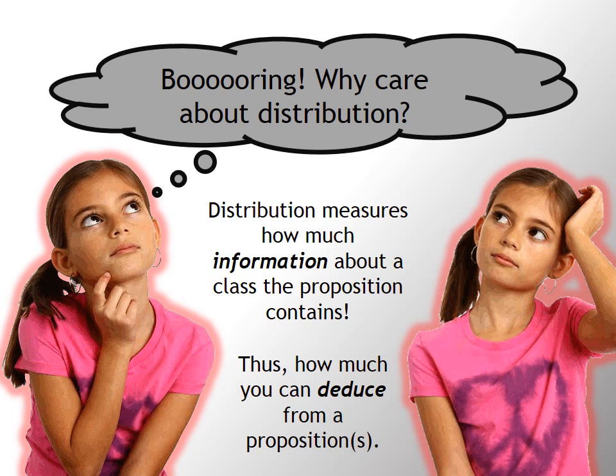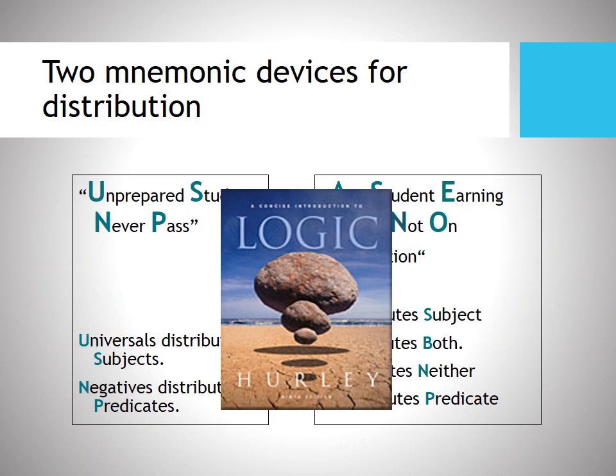Because one principle of deduction that we studied earlier is that the conclusion is never allowed to go beyond the premises. It just teases out information that was already there. So, for example, if you have a term that's distributed in your conclusion, it had better have been distributed at least once in your premises.